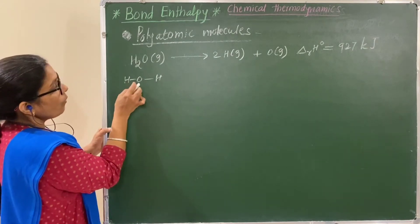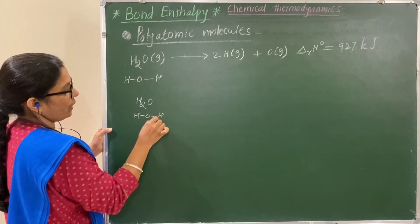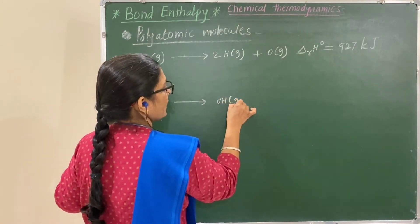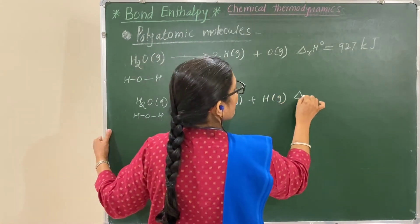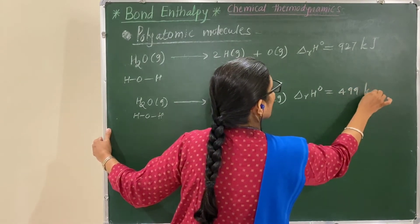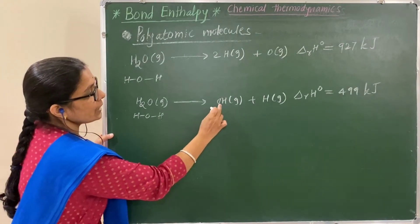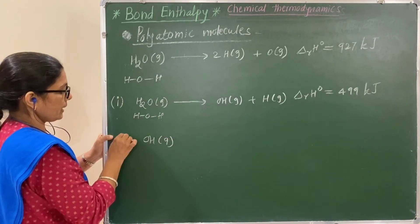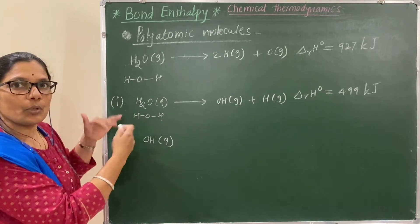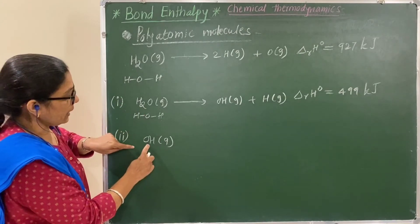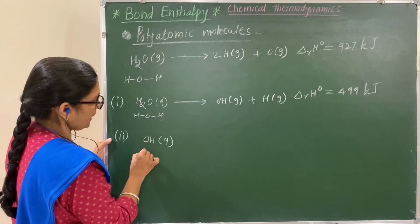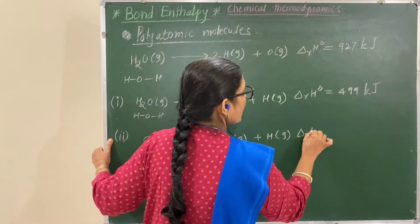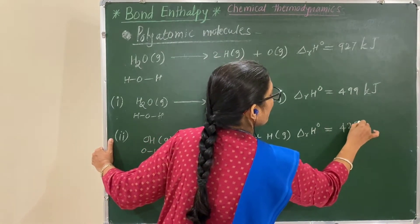Let us consider breaking one bond at a time. In the first step, one O–H bond breaks, giving OH and H in the gaseous state. The change in enthalpy for this step is 499 kilojoules. In the second step, the remaining O–H bond in OH breaks, giving O and H in the gaseous state. The change in enthalpy for this step is 428 kilojoules. So we have two steps: breaking the first bond and then breaking the second bond.